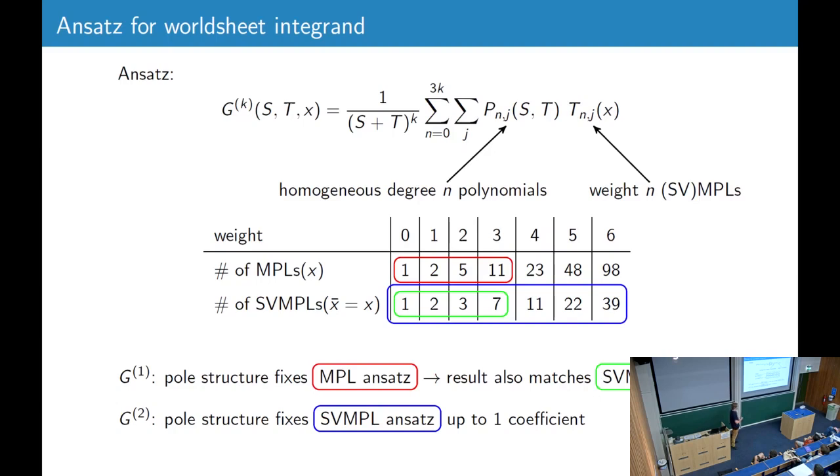But for the first curvature corrections, you can be conservative and take a multivalued ansatz, and even for this, matching with the pole structure fixes the complete ansatz, and then you can check that it also fits the single-valued ansatz. For the second correction, we directly use a single-valued ansatz, because it's much smaller, and the pole structure fixes this up to a single coefficient.